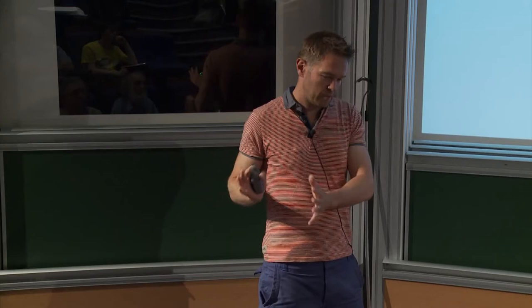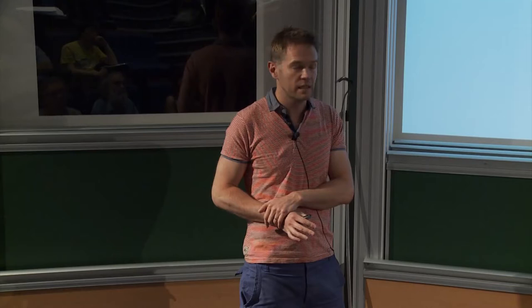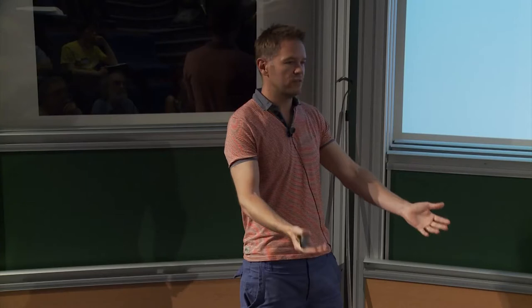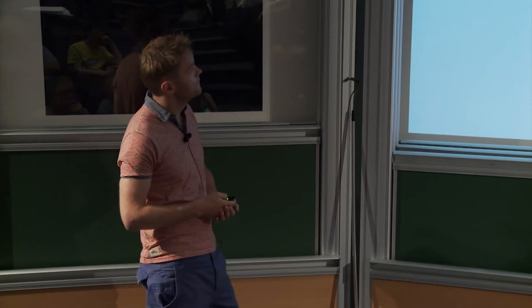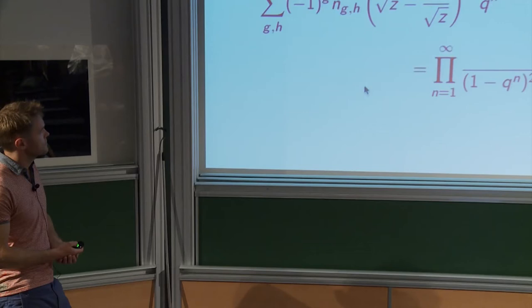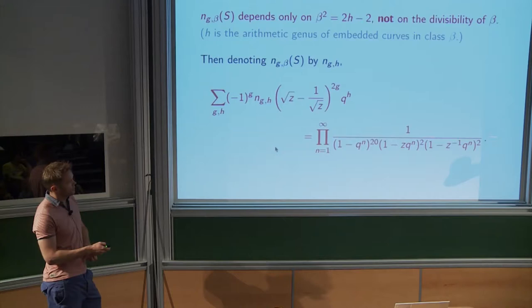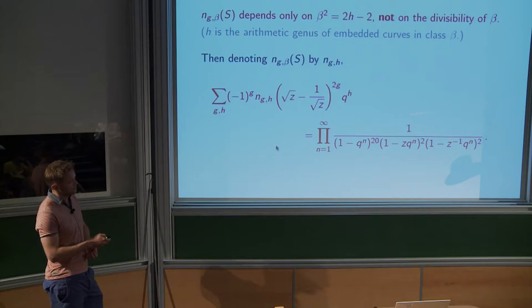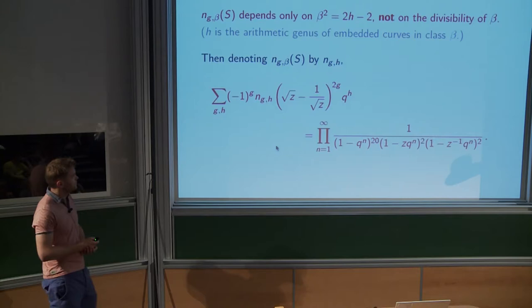That's part of the conjecture, and the other part is that it computes everything in terms of modular forms. When you take z to one, all that survives is the genus-zero part and you get the Yau-Zaslow formula: one minus q^n all to the 24 — the famous modular form. This is the kind of thing you'd want for general varieties: special functions or modular forms so that computing a few classes determines all of them. This is true for K3 surfaces.